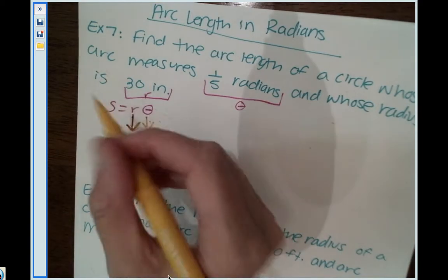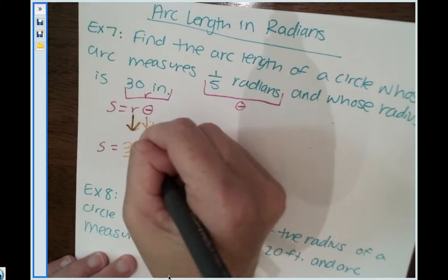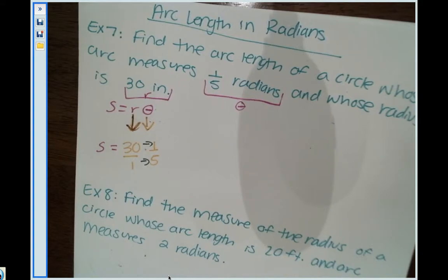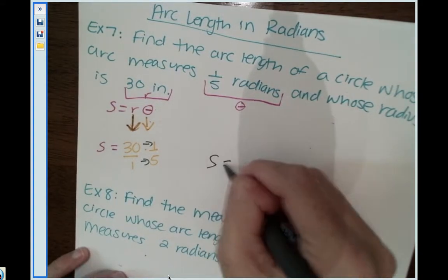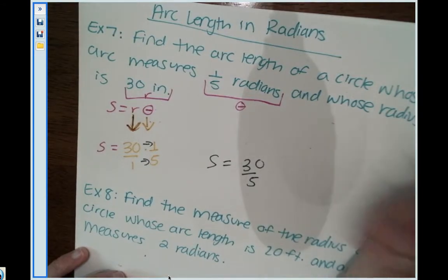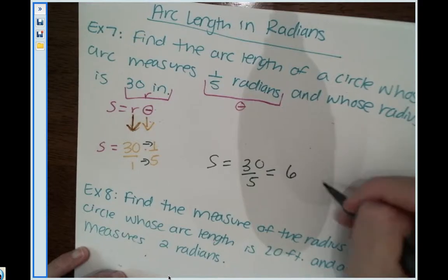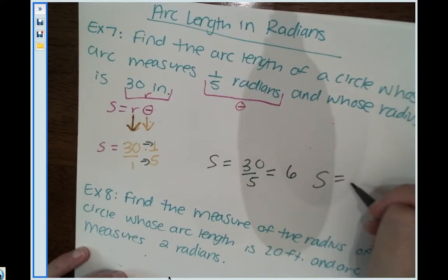Since we have two fractions, I can change 30 to be 30 over 1. All we gotta do is multiply straight across. 30 times 1 gives me 30, and 1 times 5 will be 5, which 30 over 5 simplifies to be 6. So my arc length is 6 inches.